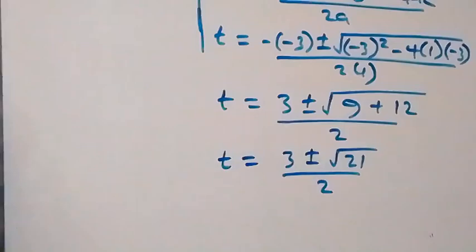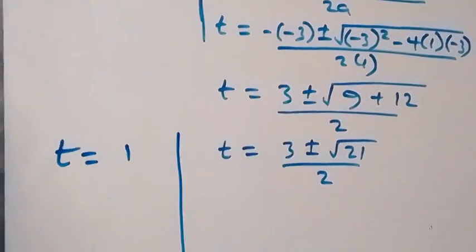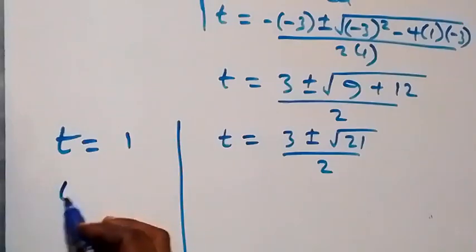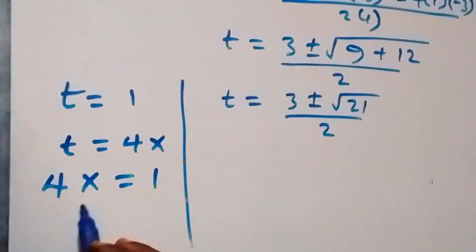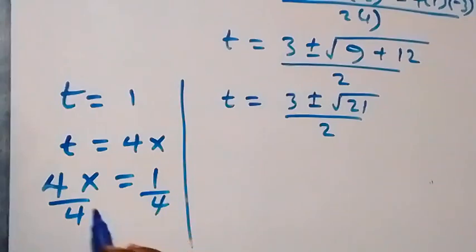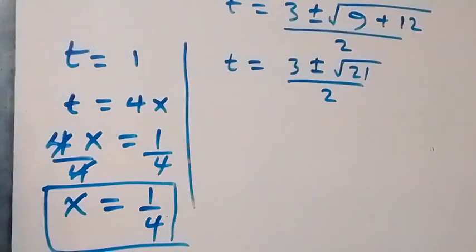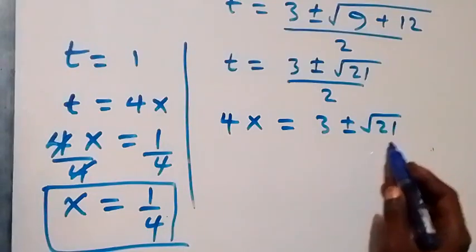So we have t equals 1, or t equals (3 plus or minus root 21) over 2. Recall that we represented t as 4x. For the first case, 4x equals 1, so dividing both sides by 4, x equals 1 over 4. For the second case, 4x equals (3 plus or minus root 21) over 2.